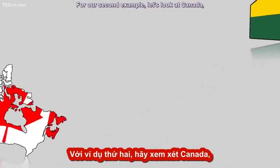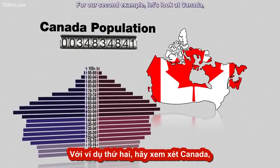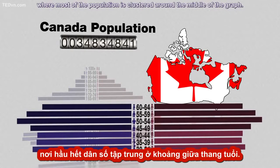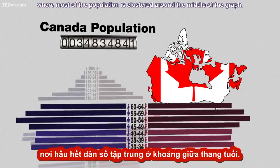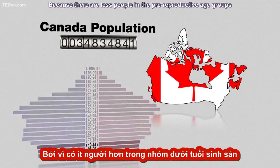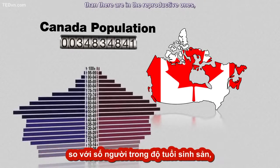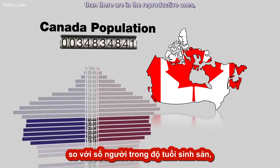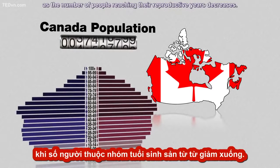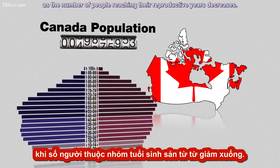For our second example, let's look at Canada, where most of the population is clustered around the middle of the graph. Because there are fewer people in the pre-reproductive age groups than there are in the reproductive ones, the population will grow more slowly as the number of people reaching their reproductive years decreases.